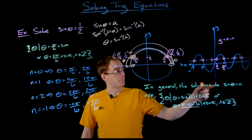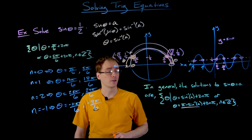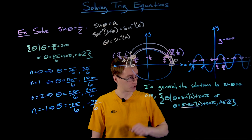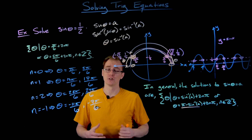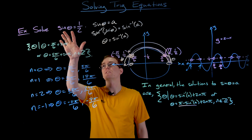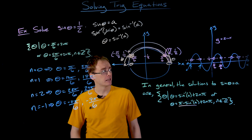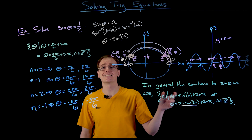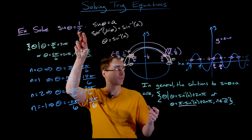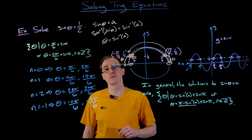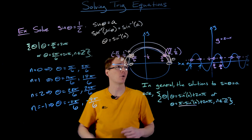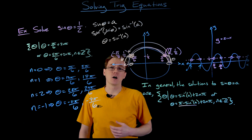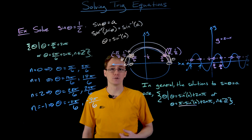The big takeaway is: if we want to solve a basic sine equation, solutions always look like this — the first from sine inverse, the second from π minus the first solution, and then we add integer multiples of the period to those first two solutions to obtain the rest. We've successfully solved sine of theta = 1/2 and found a general process. The first solution is always sin⁻¹(a), the second is π − sin⁻¹(a), and all infinitely many other solutions come from adding multiples of 2π to those first solutions.